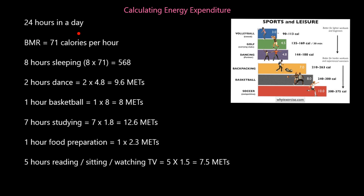We have an example of a male or female across 24 hours in a day. We've got a BMR of 71 calories per hour — they burn 71 calories doing nothing, just running essential physiological systems. If this person sleeps 8 out of their 24 hours, that's 8 times 71 calories per hour, meaning they burn 568 calories whilst asleep. That staggers some people, but you are burning calories whilst you're asleep.